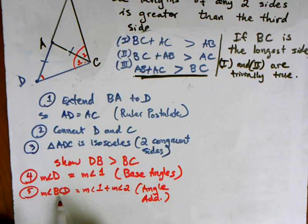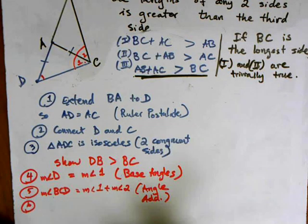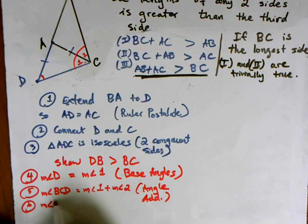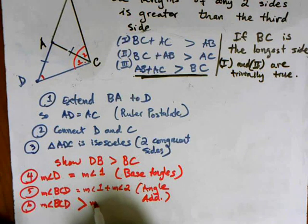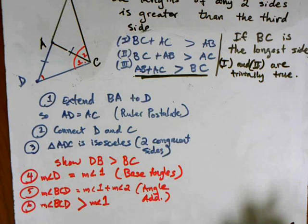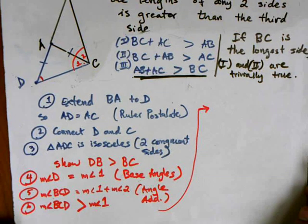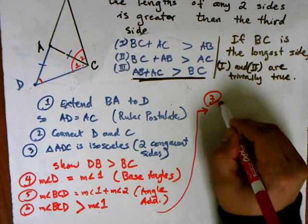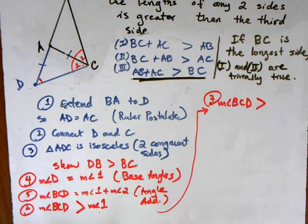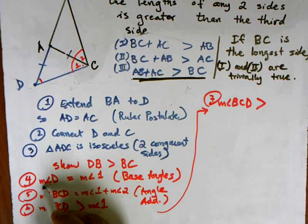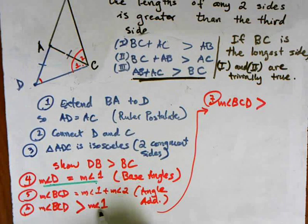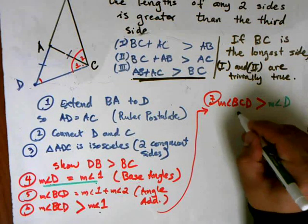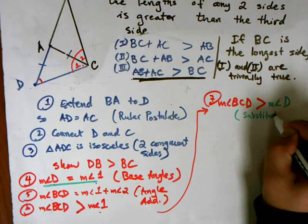From that statement, because BCD contains angle one as part of its measure, BCD has to be bigger than angle one. So the measure of angle BCD is greater than the measure of angle one. Then I can take angle D and substitute it in, since angle D equals angle one, giving me: the measure of angle BCD is greater than the measure of angle D. And my reasoning here is substitution.